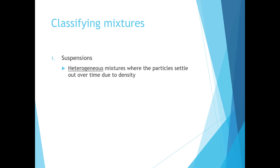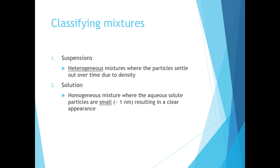As we continue through solutions, we'll talk about different types of mixtures classified based on their parts. The mixtures we've talked about so far are solutions, or homogeneous mixtures, but we can also talk about suspensions. A suspension is a heterogeneous mixture — similar to sand and water — where solute particles settle out over time due to density. You can recreate the mixture by shaking, but given time the particles will settle out again. If our homogeneous mixture has an aqueous solute small in size, light will pass through giving it a clear or translucent appearance. This type is referred to as a solution, like sugar and water.